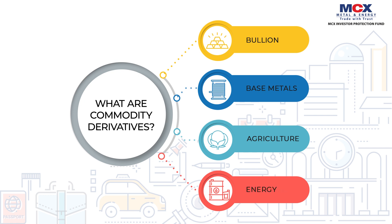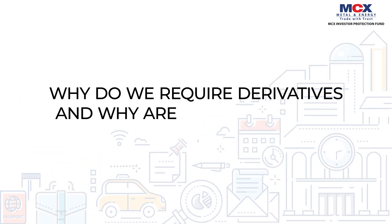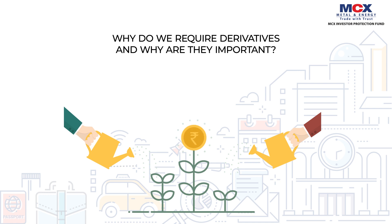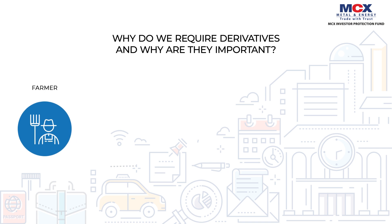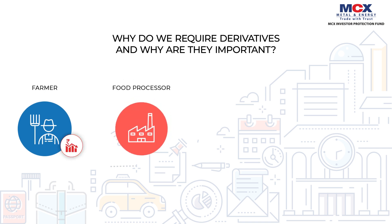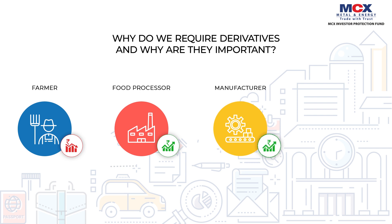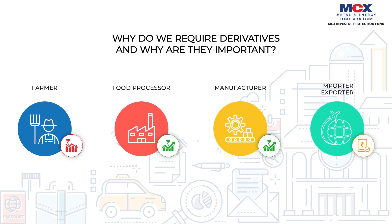Prices of derivative instruments change due to various factors, such as changes in the underlying prices. Derivatives are financial tools required for managing price risk — important for a farmer seeking protection against price decrease, a food processor seeking protection from price increases, a manufacturer seeking protection against price rise in base metals, and an importer or exporter who wish to lock into a price.